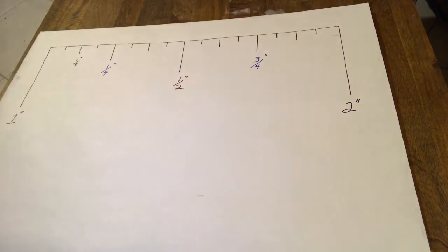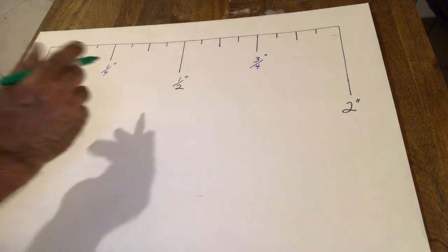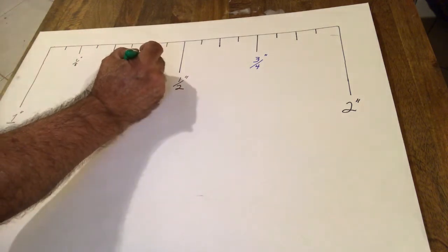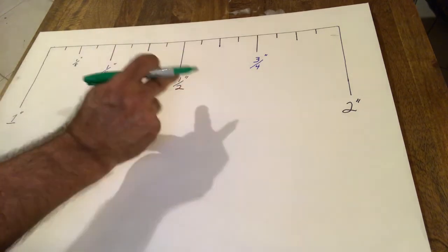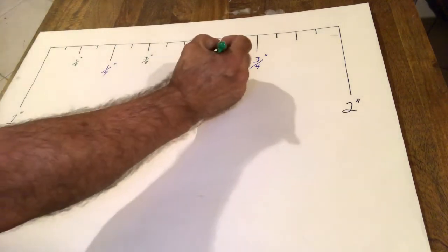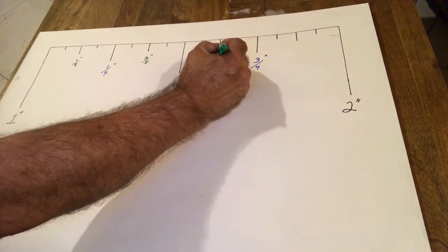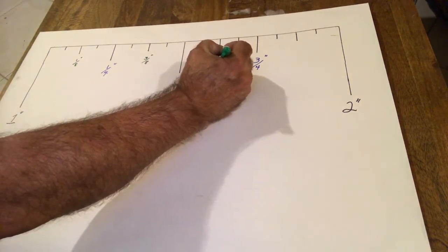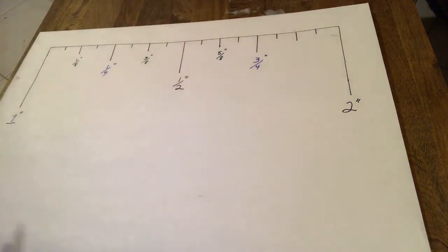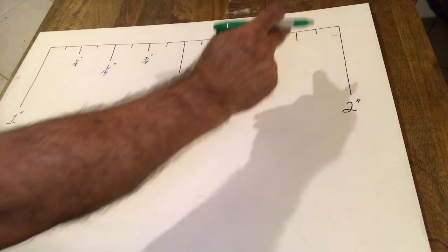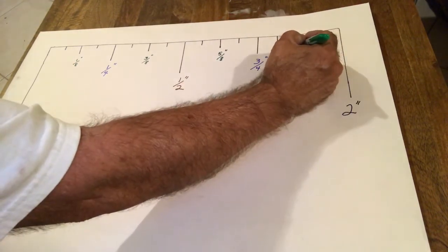So, that's one-eighth, this would be two-eighths, this would be three-eighths, four-eighths, this would be five-eighths, this would be six-eighths, and this would be seven-eighths.